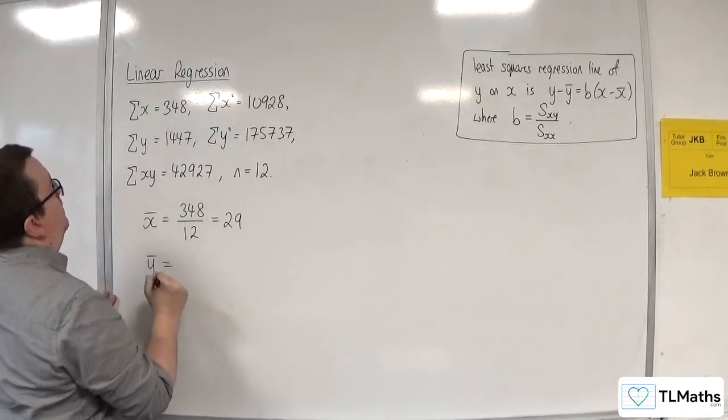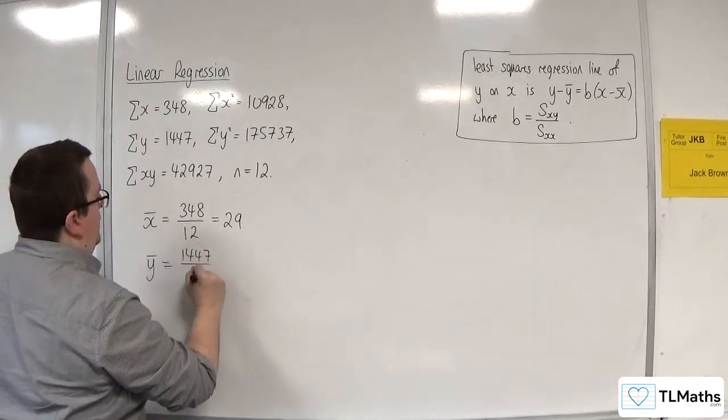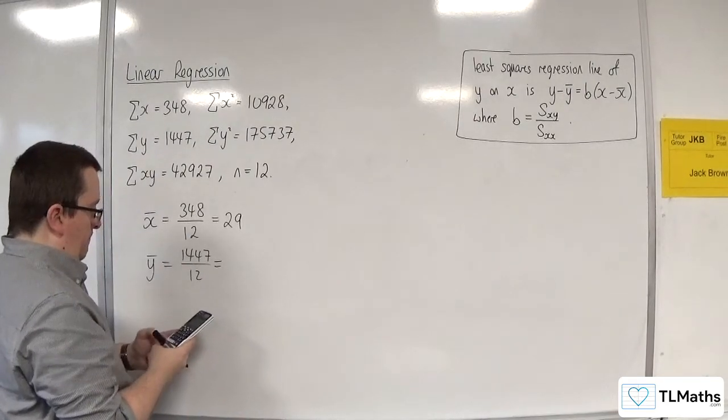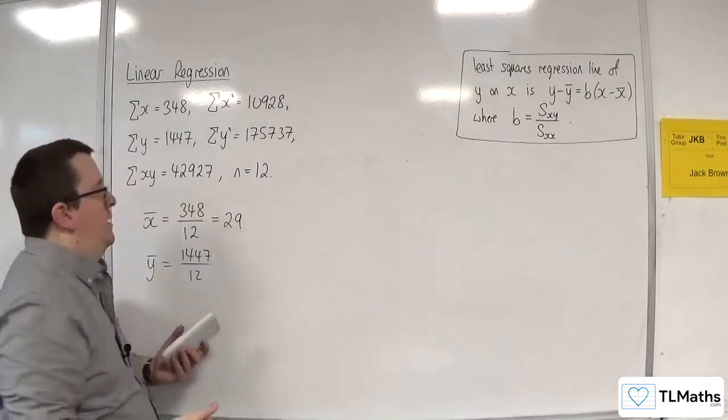So y bar is the sum of y, so 1447 divided by 12. That can't be simplified. So that's my y bar.